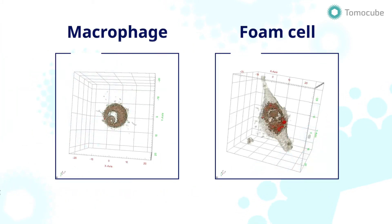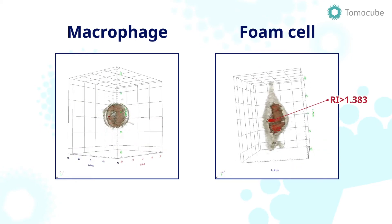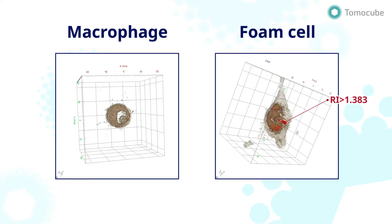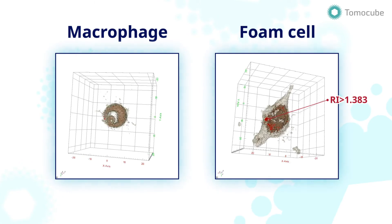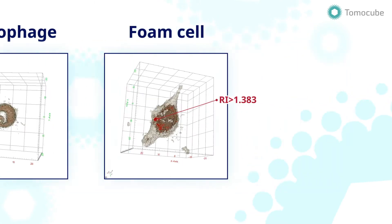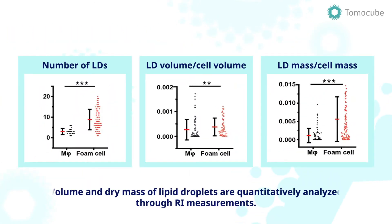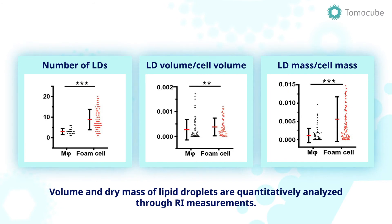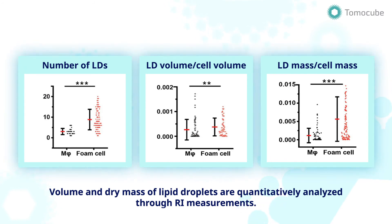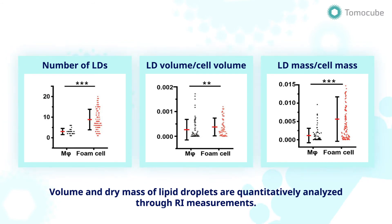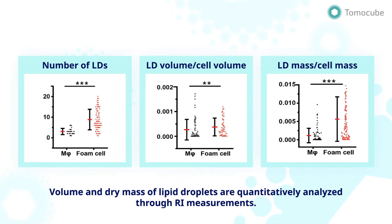Furthermore, the researchers went on to quantitatively analyze the lipid droplets. They used HT to image macrophages and foam cells and compared the lipid content in each to see the difference. The RI tomogram results show that compared to the macrophages, the foam cells show a marked increase in the number, volume, and dry mass of lipid droplets. For example, the number of lipid droplets increased fourfold in foam cells in comparison to the macrophages.